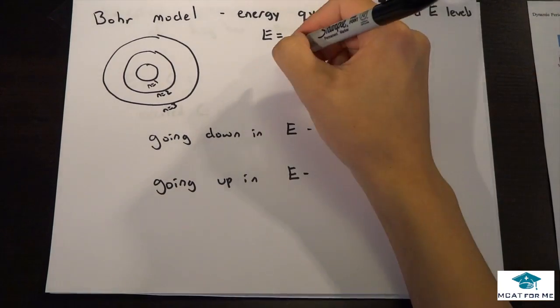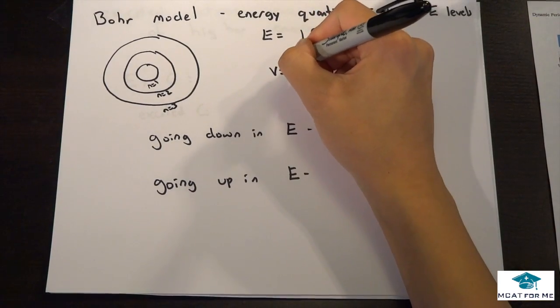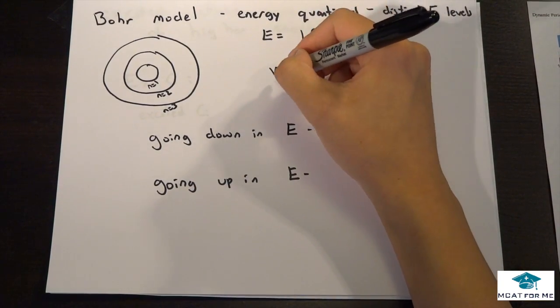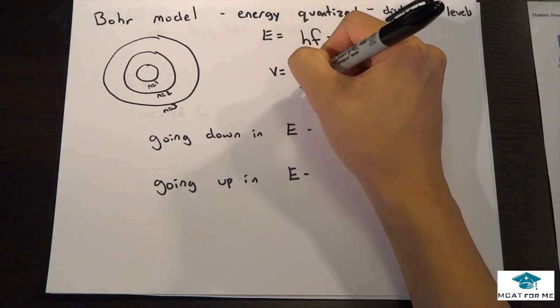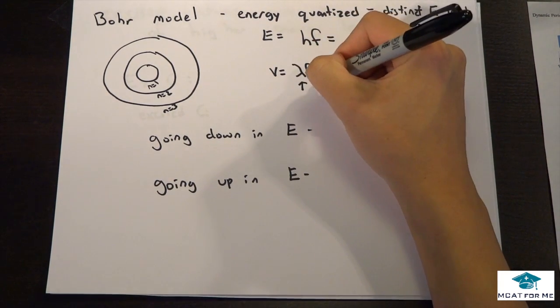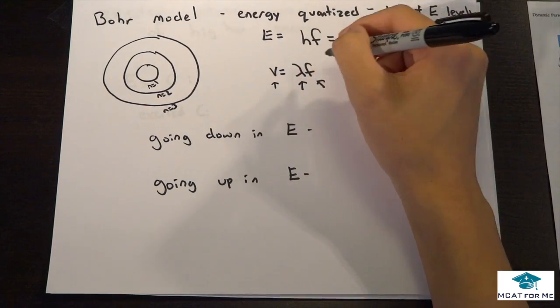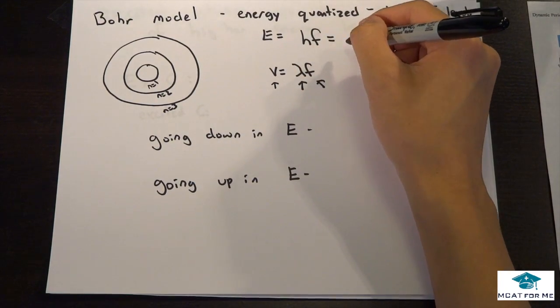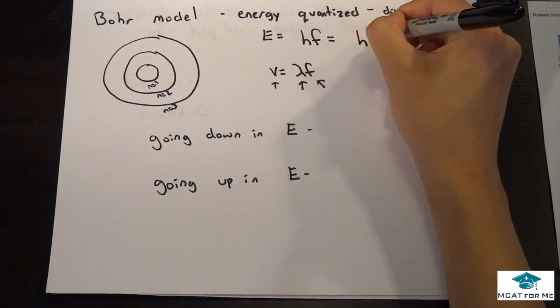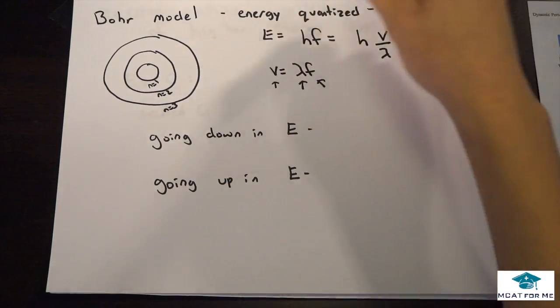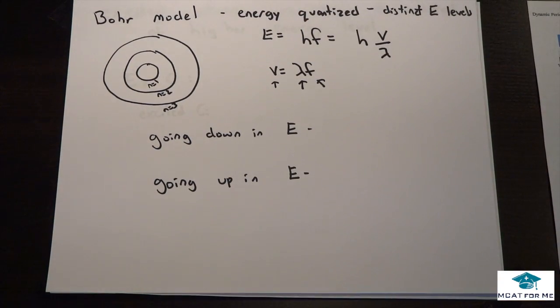If you remember from before, we know that v = λf, where λ is the wavelength, f is the frequency, and v is the speed. How can we manipulate that to put in here? We can also say E = hv/λ. This group of equations will get you a lot of points, so commit that to memory.